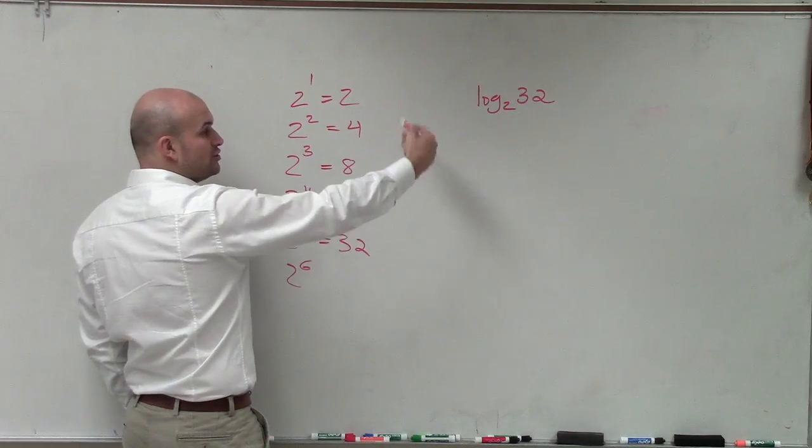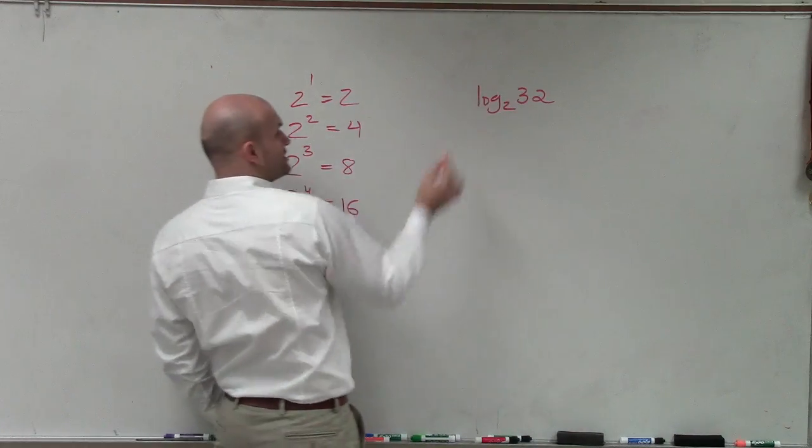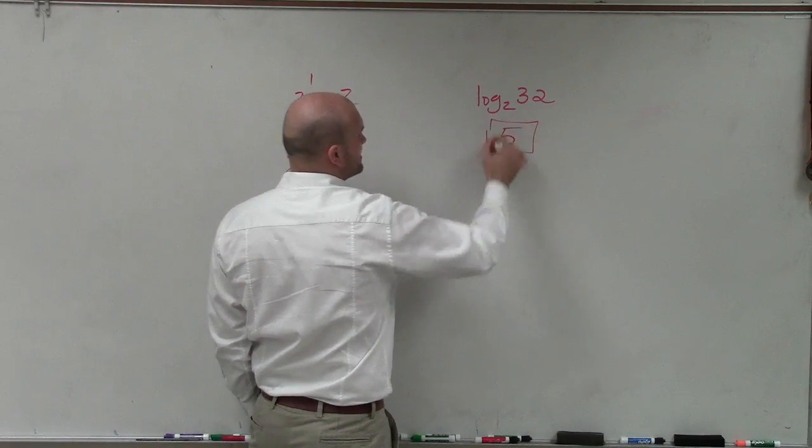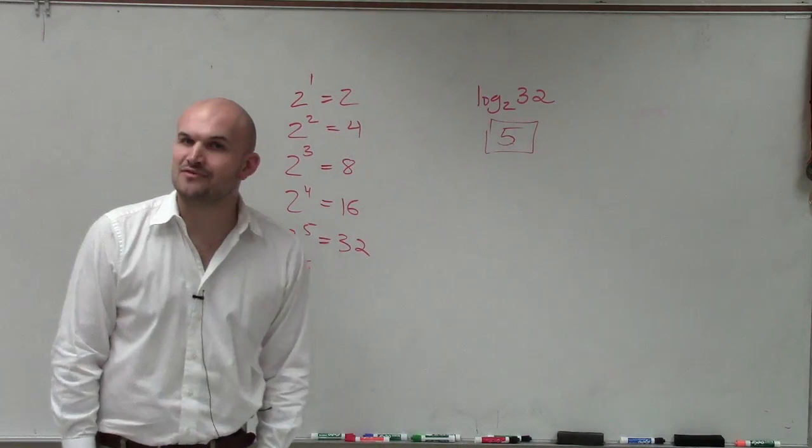So therefore, we can see that 2 raised to the fifth power equals 32. That's what our logarithm is asking. So we can evaluate this expression as the number 5. Thanks.